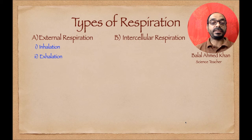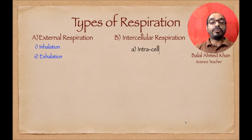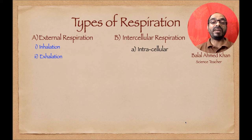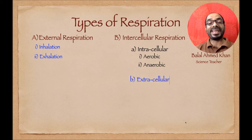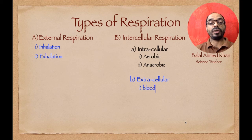The second type is intracellular respiration — respiration that occurs inside the cell. There are mainly two types: one inside the cell, generally known as aerobic respiration, and the other is anaerobic respiration. Aerobic respiration occurs in higher organisms in the presence of oxygen, producing 686 kilocalories of energy. Anaerobic respiration occurs in lower organisms in the absence of oxygen, producing only 56 kilocalories. The second is extracellular respiration — outside the cell, in the blood, where RBCs transport oxygen and carbon dioxide.